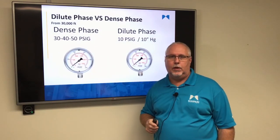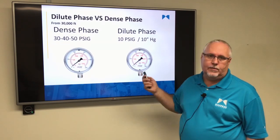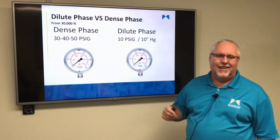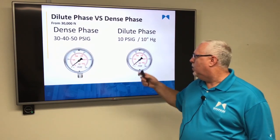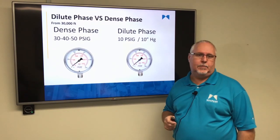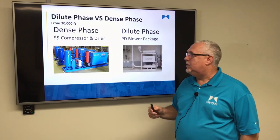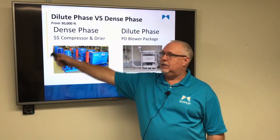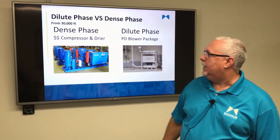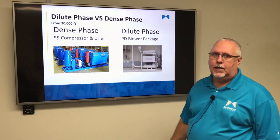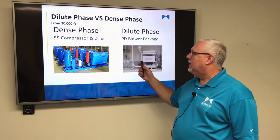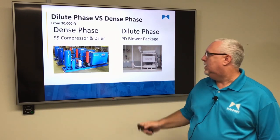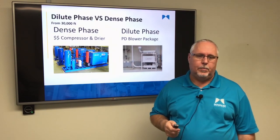From a high level, most dense phase systems will run high pressures — 30, 40, 50 PSI. Most dilute phase systems will run 10 PSI on a pressure system, or 10 to 12 inches of mercury on a vacuum system. Dense phase systems almost always require a compressor and a dryer — and that's dollar signs, because compressed air and drying of air is very expensive. PD blowers are what you'll typically see on a dilute phase system: cheaper to operate and cheaper to build.